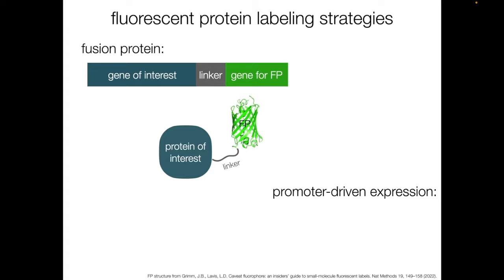Another method is to drive expression of the fluorescent protein using a promoter of interest. This method is often used to highlight specific populations of cells within an organism. Wherever the promoter is active, the fluorescent protein will be expressed.